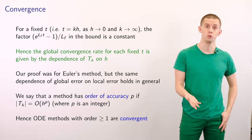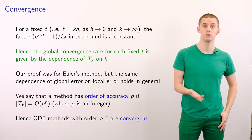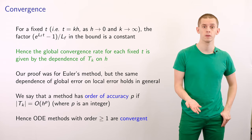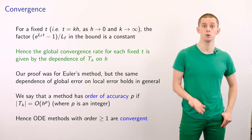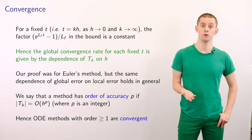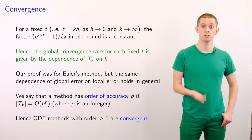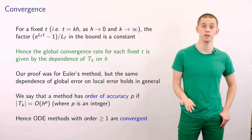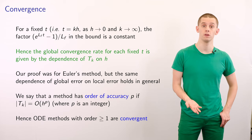Now that we've derived our error bound on ODE integration, let's look at what it tells us about convergence. The factor e^{L_f·t} − 1 divided by L_f is a constant independent of our integration step size h. Therefore, the global convergence of the method for a fixed t will be governed by the dependence of our truncation errors on h. While our proof was for Euler's method, the same dependence of global error on local error holds in general. We say a method has order of accuracy p if our truncation errors scale like O(h^p), where p is an integer, and ODE methods with order greater than or equal to 1 are convergent.